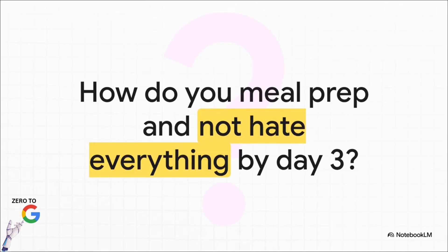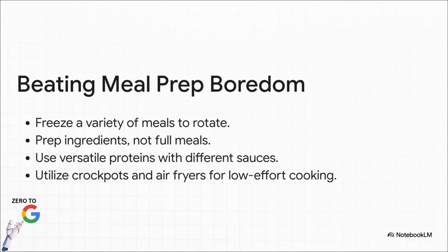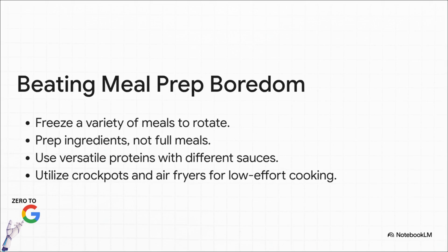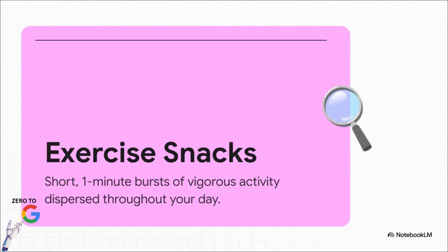Let's talk about a classic planning challenge: meal prep. You spend your entire Sunday cooking and by Wednesday, you can't look at another identical container of chicken and broccoli. The key insight? Stop prepping full identical meals. Instead, prep ingredients — chopped veggies, cooked quinoa, grilled chicken — that you can mix and match, or make big batches of different meals you can freeze and rotate. It's all about building variety in from the start. Now, let's talk about habits that don't require finding extra time but fit right into the life you're already living. Forget the 60-minute gym session — let me introduce you to exercise snacks: short, one-minute bursts of vigorous activity sprinkled throughout your day.